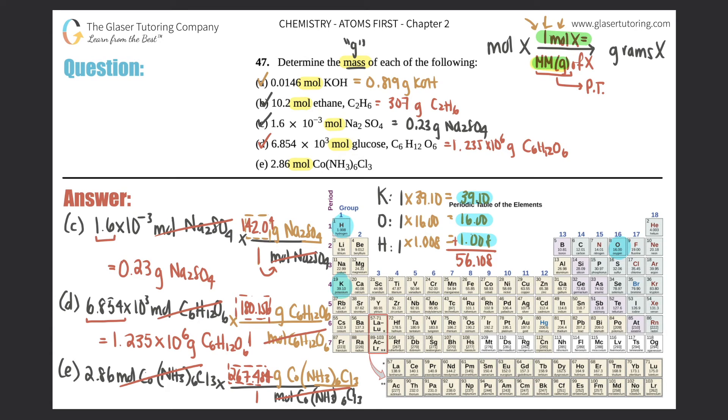Cancel out the word mole of this compound and then just multiply across. This times 2.86, and we have three sig figs, so we need three sig figs. This would be 765 grams of Co(NH3)6Cl3. That's the answer - that's all five answers.